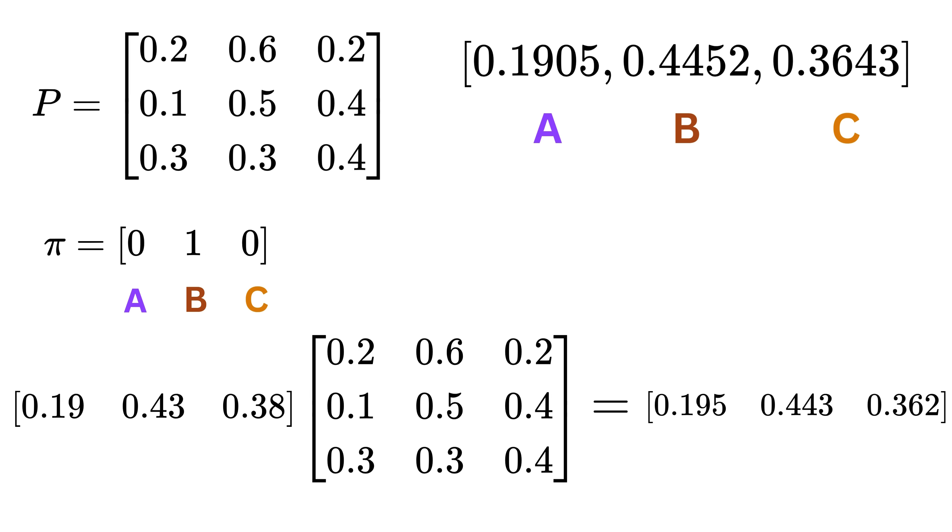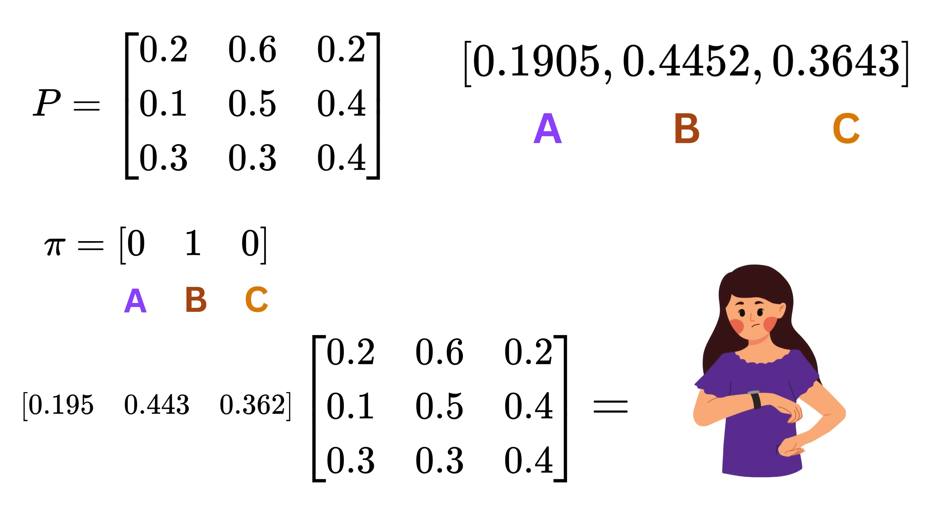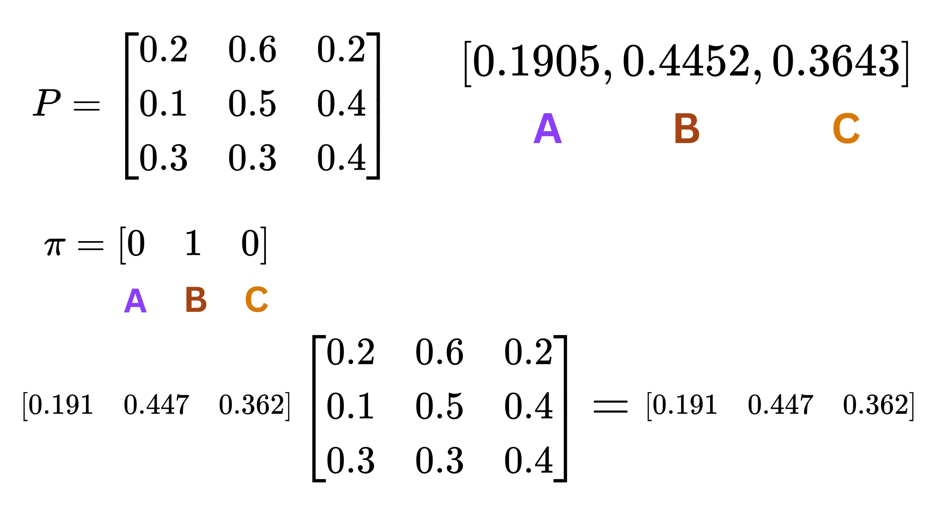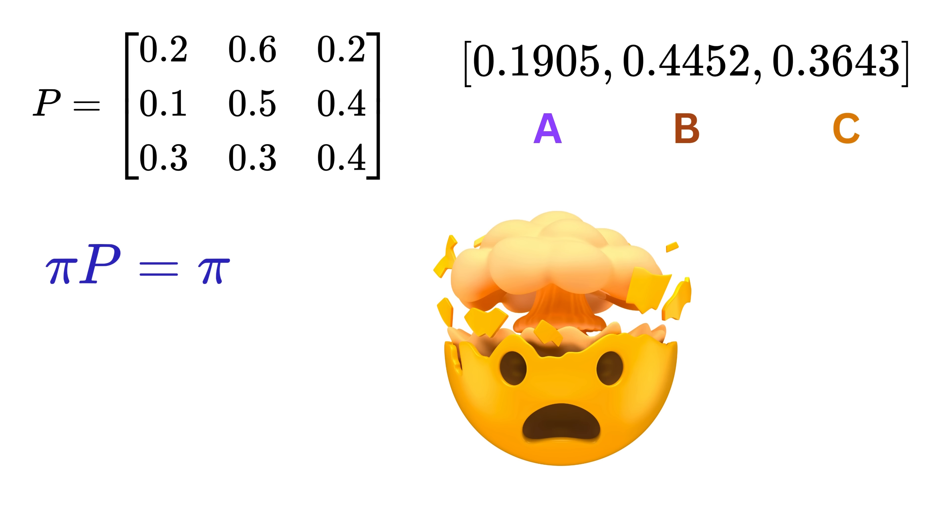Now, if a stationary distribution exists, then at some point, the vector we get after multiplying with P will stop changing. In other words, the input vector and the output vector will become the same. This means pi times P equals pi.